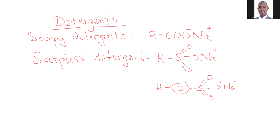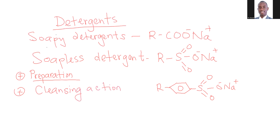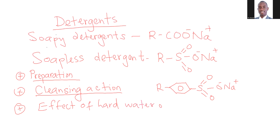Important things to remember about the soapy and soapless detergents: number one is how they are prepared. Usually soapy detergents are made from the action of fatty acids and strong alkali. Then the soapless detergents are prepared from petroleum products. Another important thing is the cleansing action — how soap removes grease or dirt from cloth. And finally, the third key point is the effect of hard water on both soapy and soapless detergents.